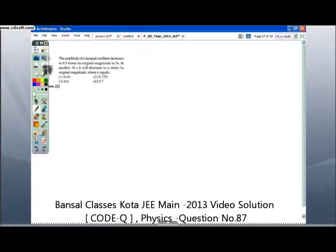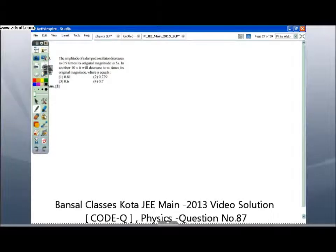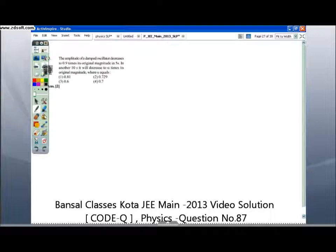This is question number 87. The amplitude of a damped oscillator decreases to 0.9 times the original magnitude in 5 seconds. In another 10 seconds, that is after 15 seconds, the amplitude will decrease to alpha times its original magnitude.